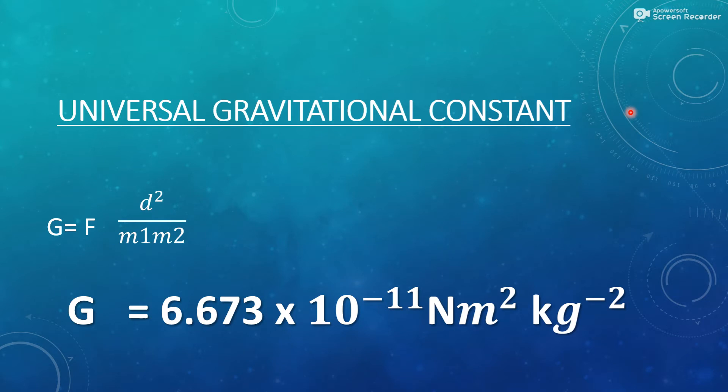So we will get, at last, G is equal to F D square upon M1 and M2 which is called universal gravitational constant.